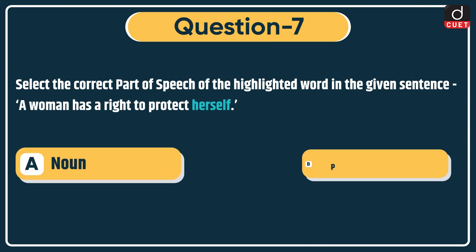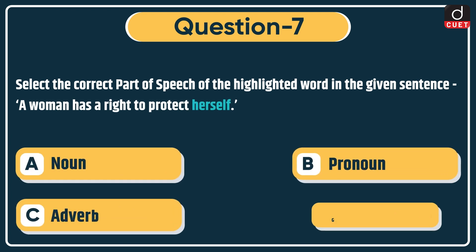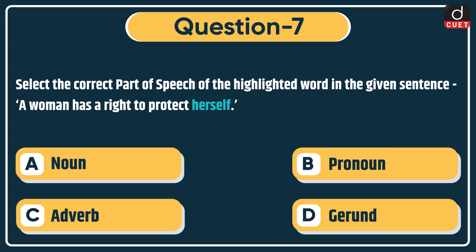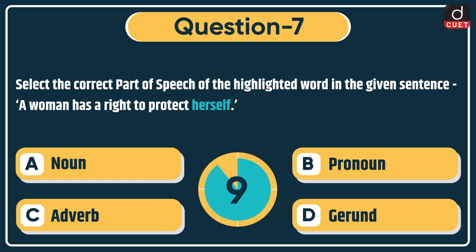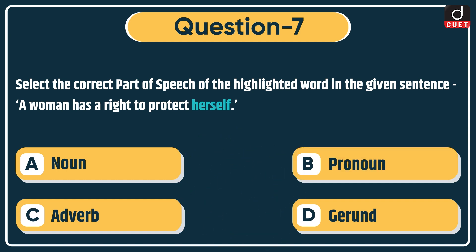Next question: select the correct part of speech of the highlighted word in the given sentence — 'A woman has a right to protect herself.' Options: noun, pronoun, adverb, or verb. The correct answer is option B: pronoun.